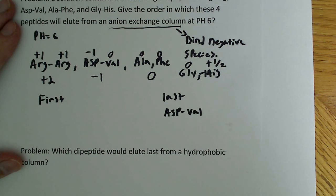Because remember, it's an anion exchange column, it's binding negatively charged species tightest. Negatively charged species, only one that's negatively charged, it's going to be the tightest.